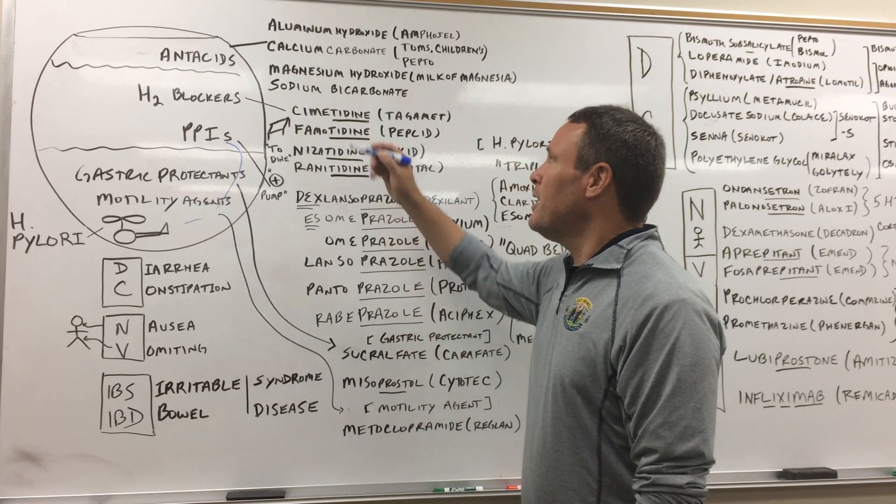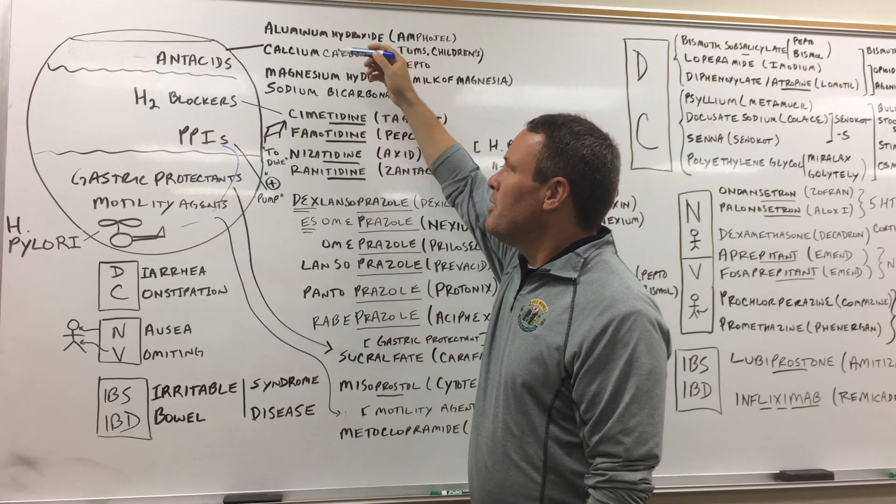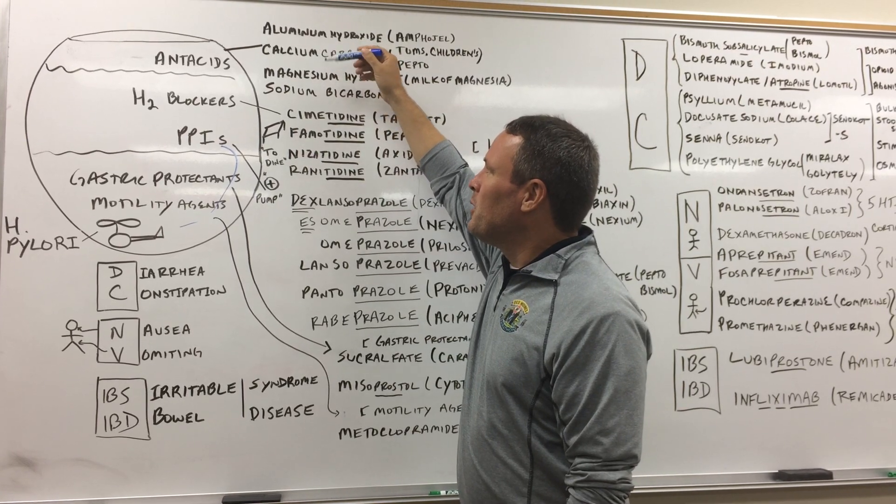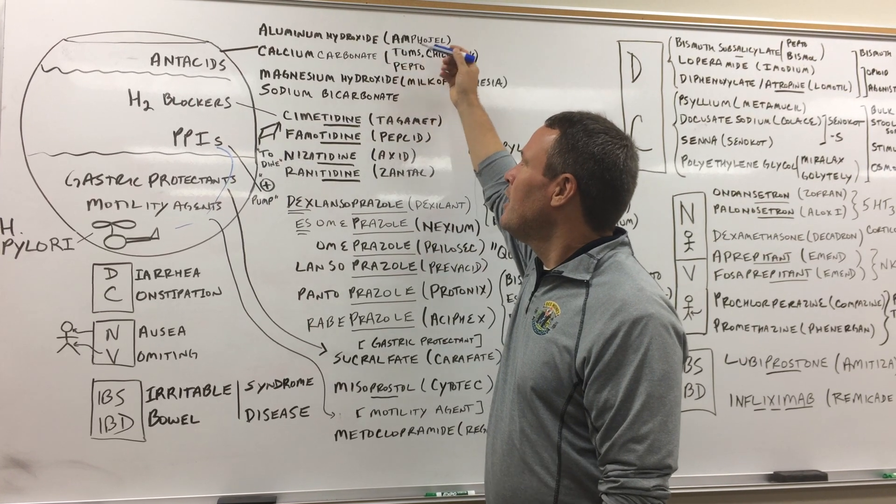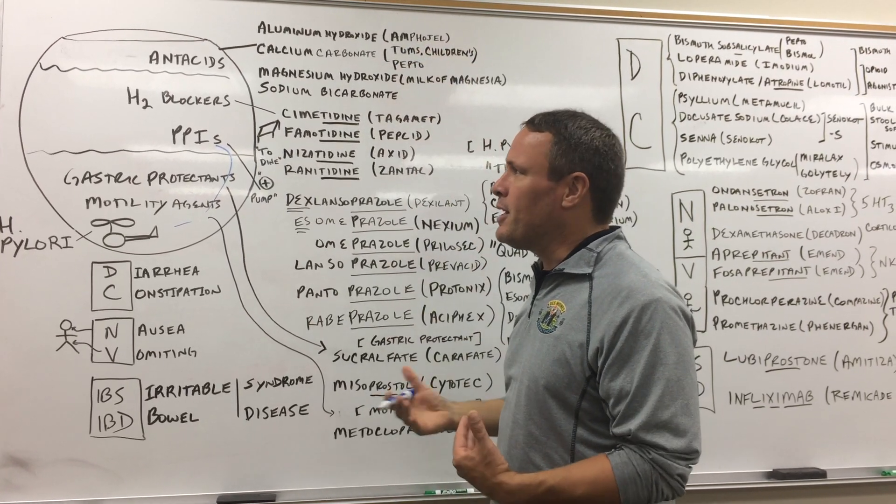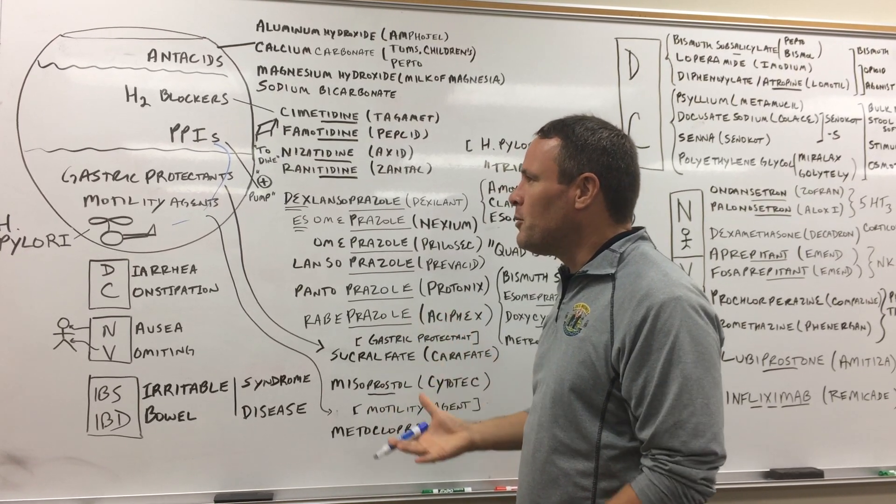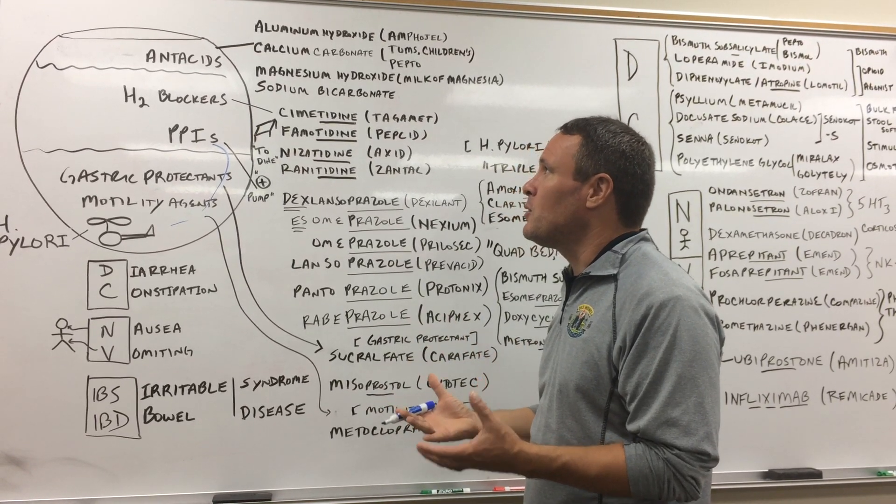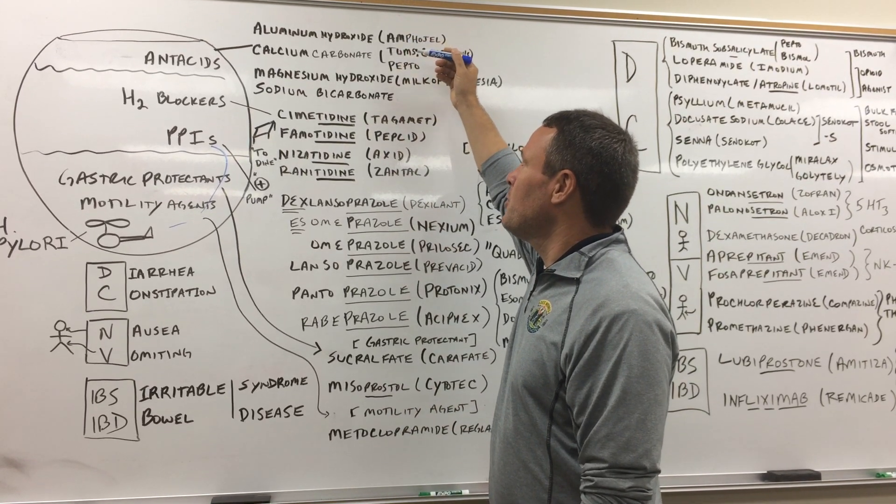And so we'll start with the antacids. I just alphabetize them because there's no real relationship that's necessarily too big between them. Aluminum hydroxide, calcium carbonate, both of them have to do - you can both get constipation from both of them, you can both deal with phosphate binding as well, so hyperphosphatemia, but that just is a coincidence that those two are together.